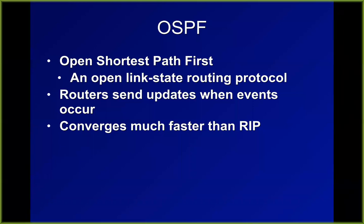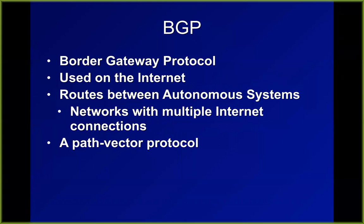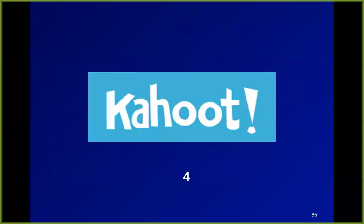These days RIP is only used for very small networks of maybe four routers; anything more complicated uses OSPF or proprietary protocols like Cisco's EIGRP, which converges even faster but isn't covered by the CISSP exam. BGP is a path-vector protocol used once you go out to the internet, counting distance not by hops but by the number of autonomous systems (companies) you pass through.